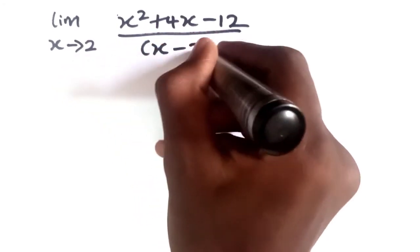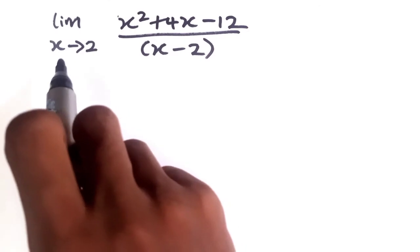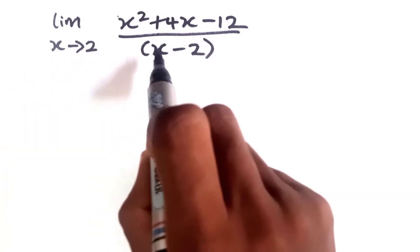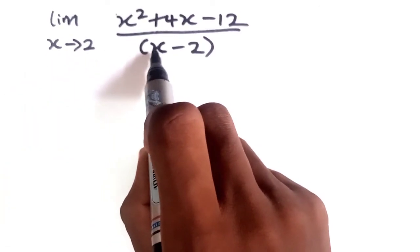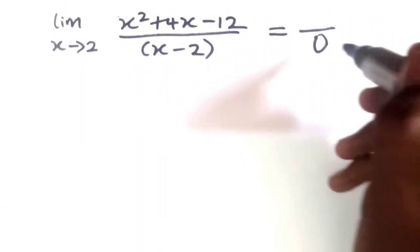Now when we look at this question closely, what we'll find out is that if we substitute 2 in our denominator, we'll have 2 minus 2, which is going to give us a denominator of 0, and this is undefined.